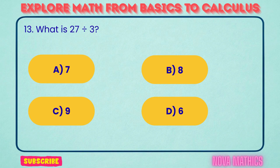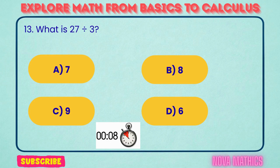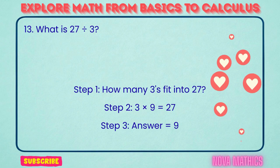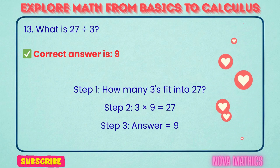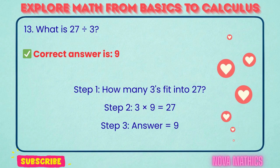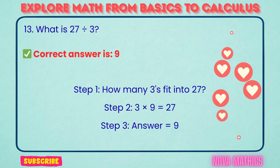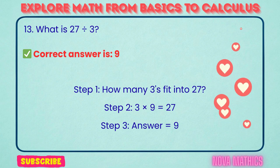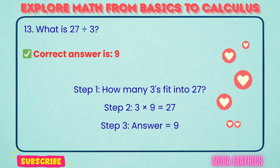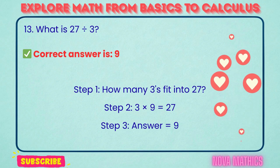13. What is 27 divided by 3? Correct answer is 9. 27 divided by 3 equals 9. We find this because 3 times 9 is 27.